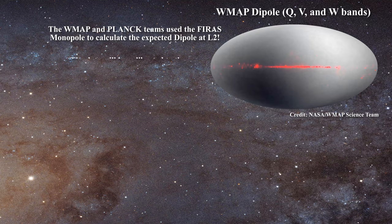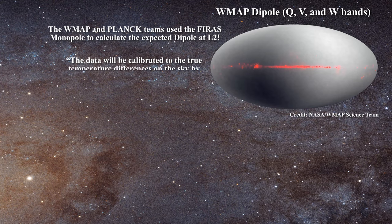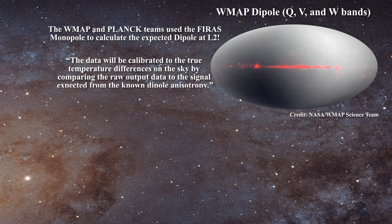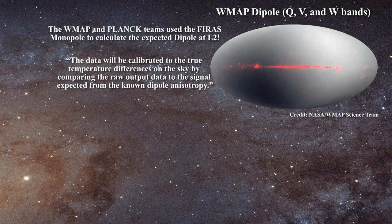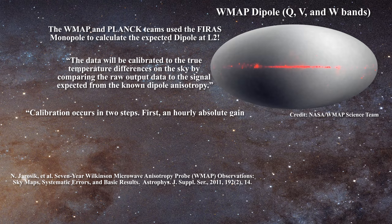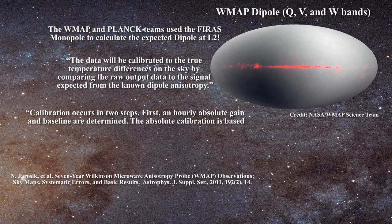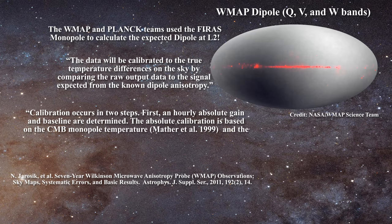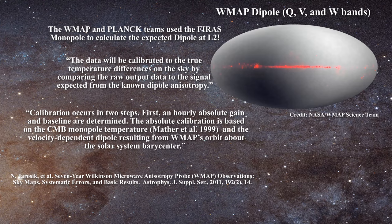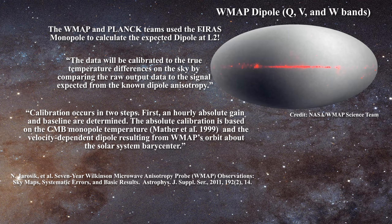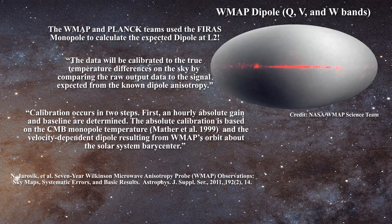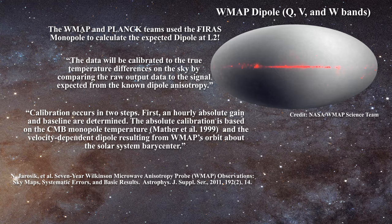The WMAP website describes it in this way: the data will be calibrated to the true temperature differences on the sky by comparing the raw output data to the signal expected from the known dipole anisotropy. In a paper, they give more detail. Calibration occurs in two steps. First, an hourly absolute gain and baseline are determined. The absolute calibration is based on the CMB monopole temperature — Mather et al. 1999 — and the velocity-dependent dipole resulting from WMAP's orbit about the solar system barycenter. The Mather et al. reference is the COBE monopole value. Essentially the same approach is taken by the Planck team; for the monopole they cite a reference by Fixsen instead of Mather, but both results come from the same satellite.